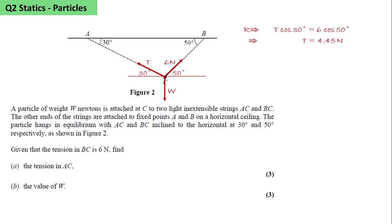Find the value of W. We resolve vertically. W equals T sine 30 plus 6 sine 50, which means W equals 6.82 newtons.